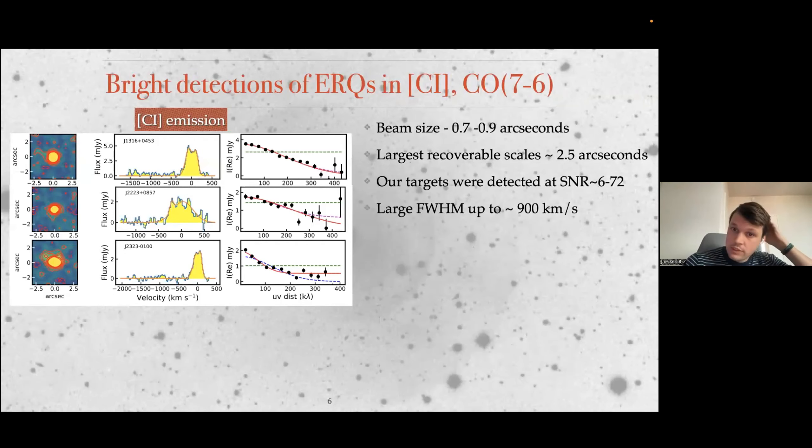And then of course there is a dust continuum that you get at rest frame 370 micron. Usually galaxy SEDs peak around 150, so you are tracing the Rayleigh-Jeans tail of the cold dust of around 30 Kelvin. The ALMA observations were 0.7 to 0.9 arc second in full width half maximum when we image them with natural weighting. The largest recoverable scales were more than two arc seconds, which is ideal for our work. They have quite large full width half maximum in the line width of around 900 kilometers per second because they are powerful quasars with turbulent ISM.